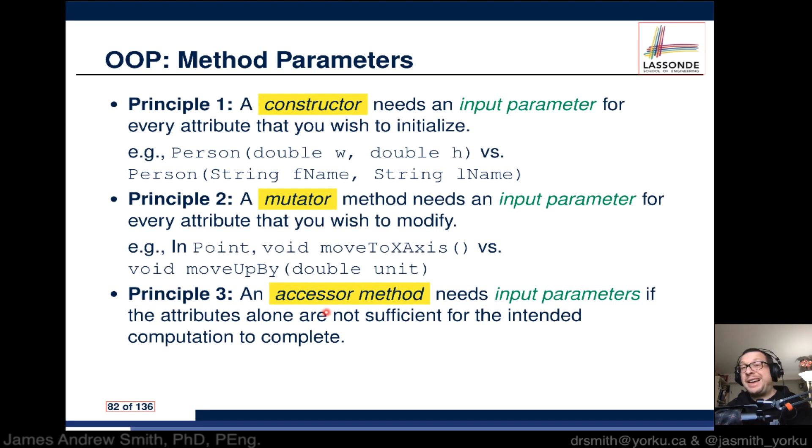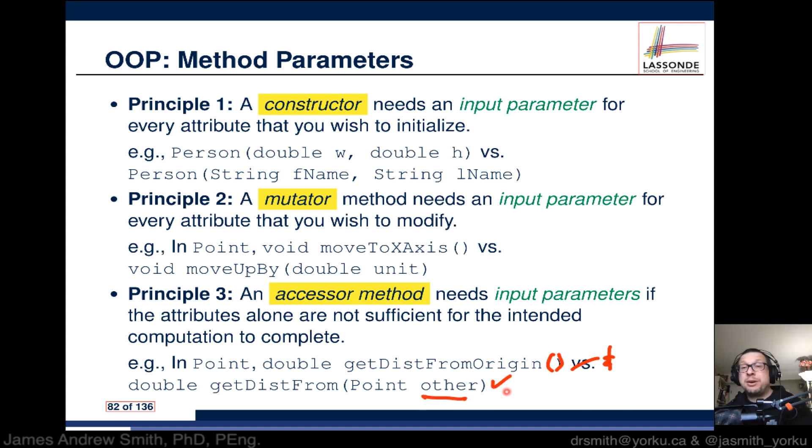Principle number three: An accessor method needs to have input parameters if the attributes alone are not sufficient for the intended computation to complete. Here's two examples. In Point, we have double getDistanceFromOrigin - we don't need to have any input parameters. On the other hand, if we want to get distance from an object, we have to specify what that other object would be, what that other point would be. That would make sense having an input argument.